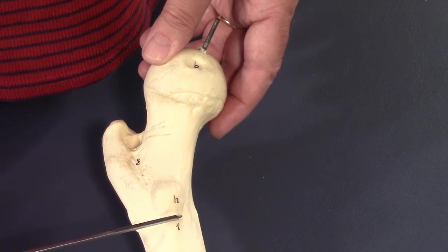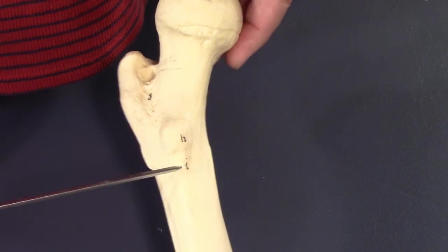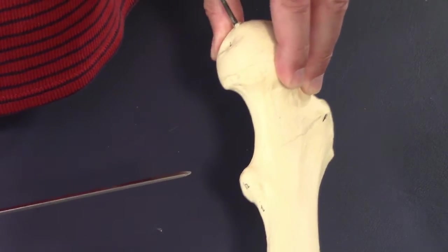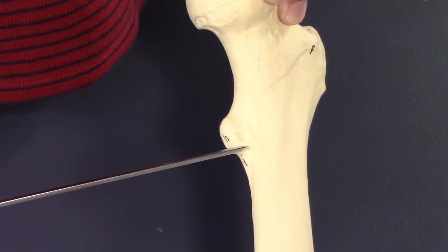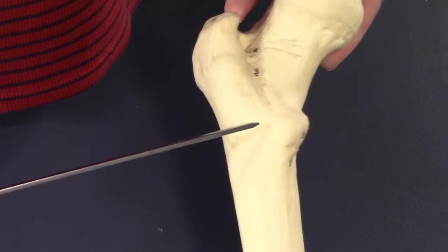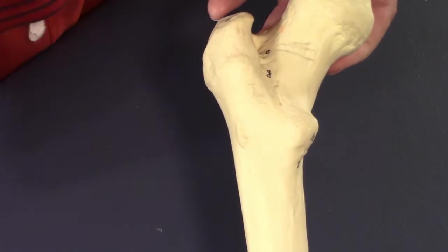Anyway, I digress. So where were we? Pectineal line was right here, pectineal line of the femur. If I turn it like this we can see it a little more. And now I think we're ready to just keep going on the back side.